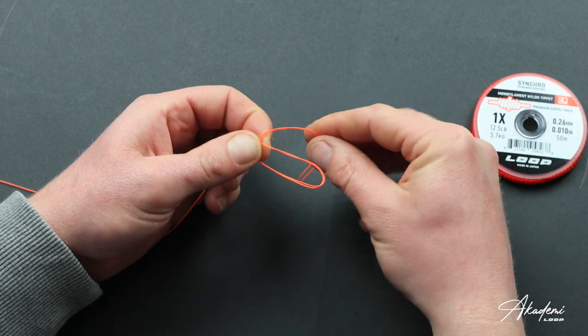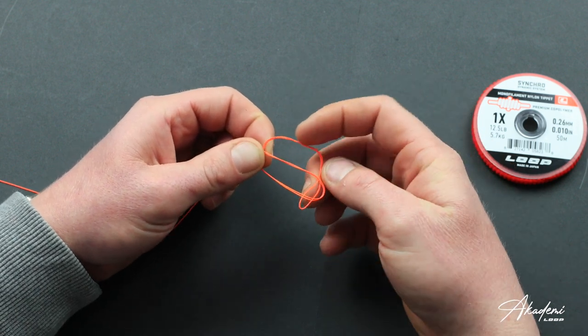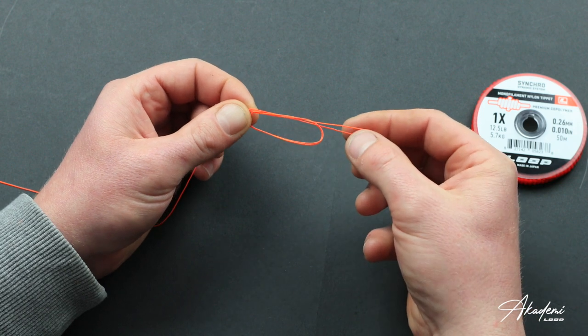Now we're going to bring it around another half turn and we're going to bring it up through that loop. Now we can start getting ready to pull tight.